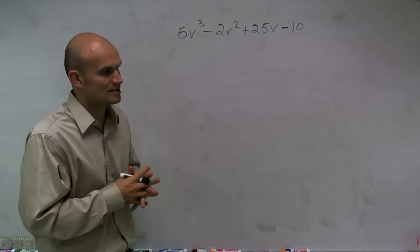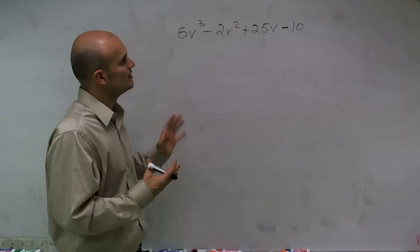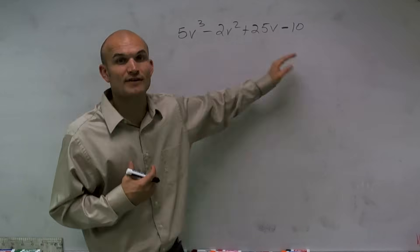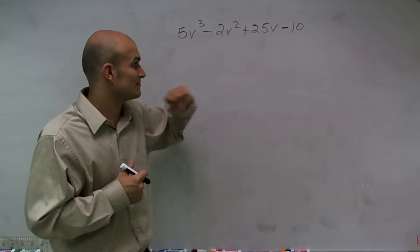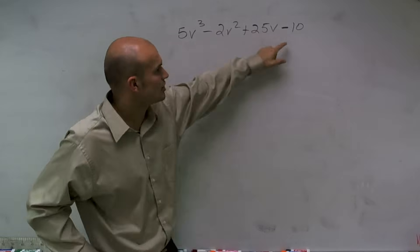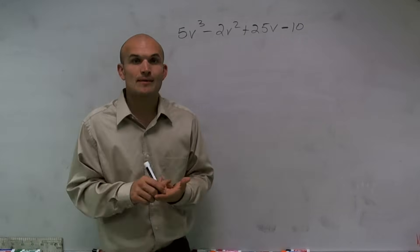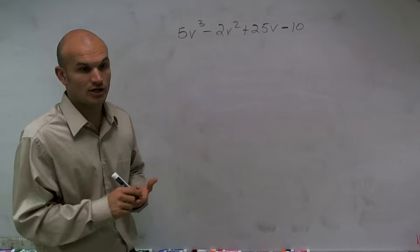So what factoring by grouping is just a simple way to look at factoring when we have our four terms where we can't factor out a GCF. Because I look at this, each one of these four terms, they don't share any greatest common factors, either their numbers or their terms.